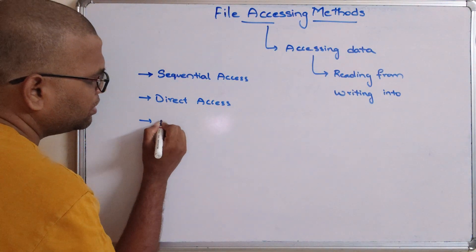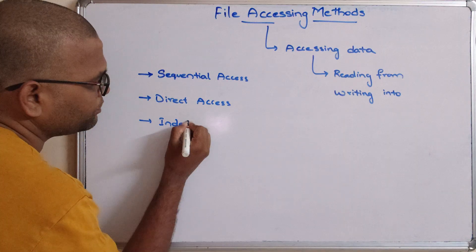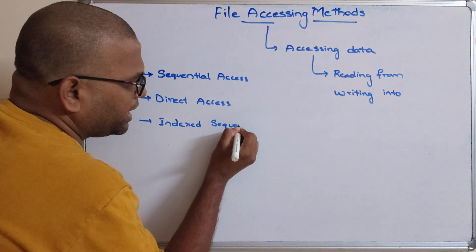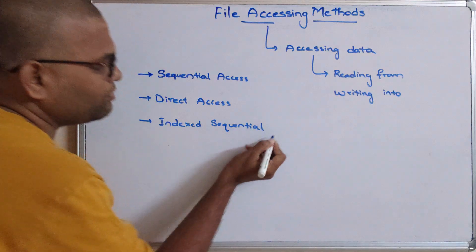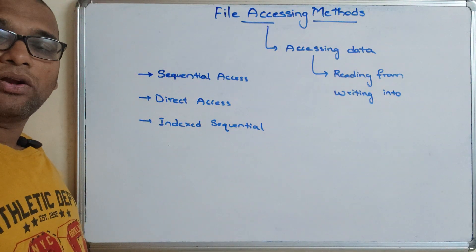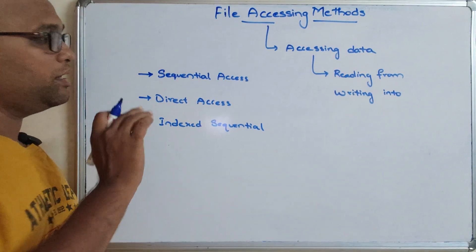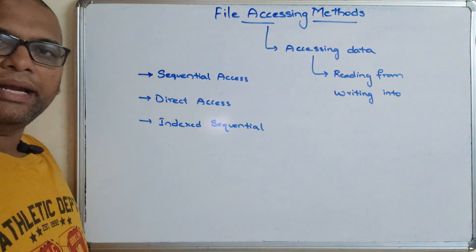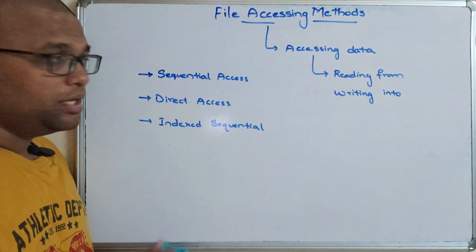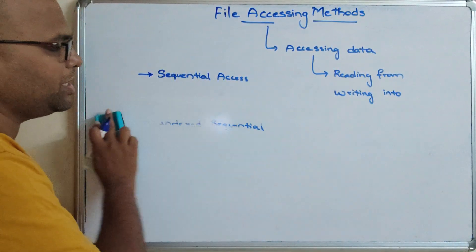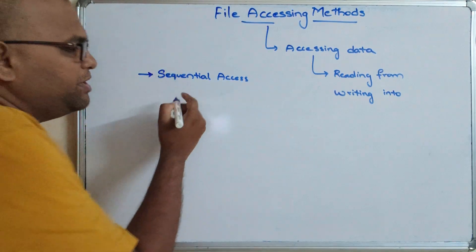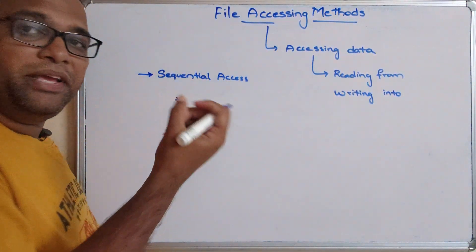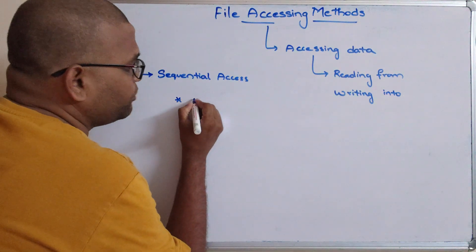and the third one is indexed sequential access. We'll see them one by one — how we can access data in sequential mode, direct mode, or indexed sequential mode. Let us start with sequential access. The name itself indicates that data will be accessed in a sequence.